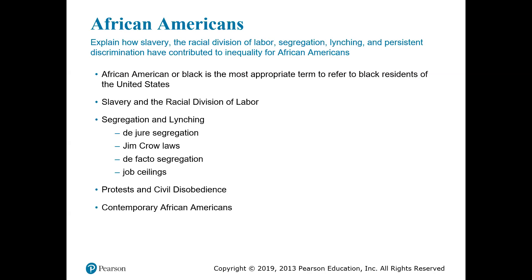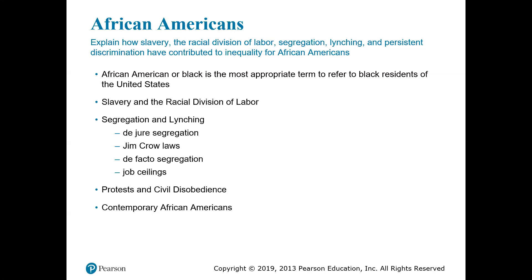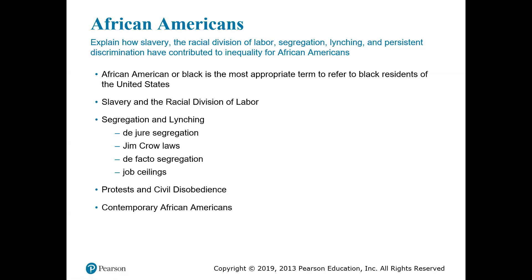During World War II, new jobs opened up for African Americans in northern defense plants after a presidential order was issued prohibiting racial discrimination in federal jobs. After the war, increasing numbers of African Americans demanded an end to racial segregation. The civil rights movement culminated in passage of the Civil Rights Act of 1964 and 1965, which signified the end of de jure segregation. However, de facto segregation was far from over. Since the 1960s, African Americans have made substantial gains in politics, education, and median income, but the median income they earn is nowhere near what their white counterparts earn, and inequality remains persistent.